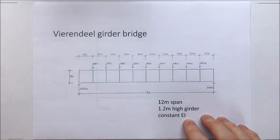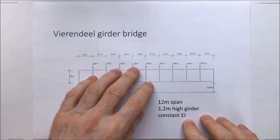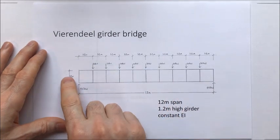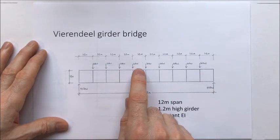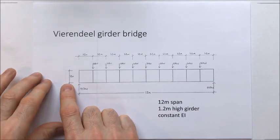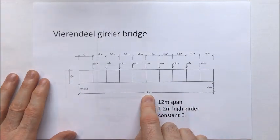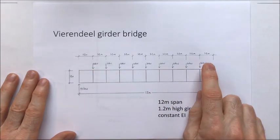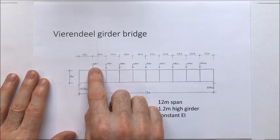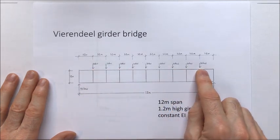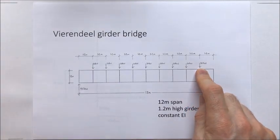So here we have a Vierendeel girder. Let's say it's a bridge, 12 meters long with 10 bays of 1.2 meters. So it's not a very long bridge, but it's 12 meters long, 1.2 meter high, square bays and a whole series of 9, 10 kilonewton loads, making a total load of 90 kilonewtons.